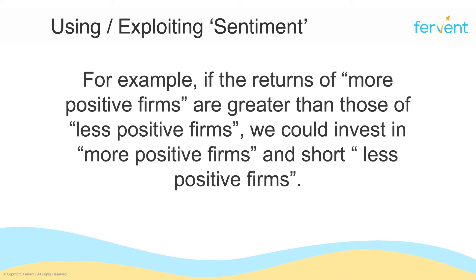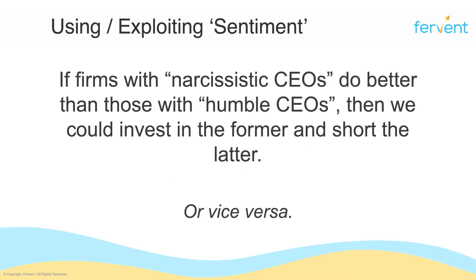At this stage, you don't really need to worry about how we go about estimating sentiment — how we determine which firm is more positive and which firm is less positive. You're going to learn how to do that later on. For now, the key takeaway is that if we manage to estimate the level of positivity of firms and find that the difference in positivities actually matters, then we would go long or buy shares of firms that are more positive and sell or short shares of firms that are less positive. Similarly, if we find that firms with narcissistic CEOs do better than firms with humble CEOs, then you can invest in firms led by narcissistic CEOs and short firms led by humble CEOs.